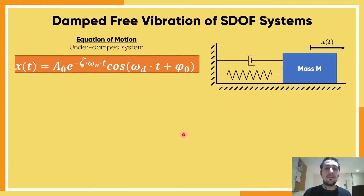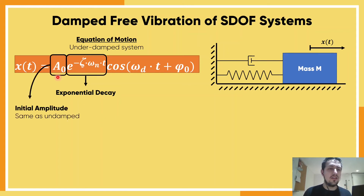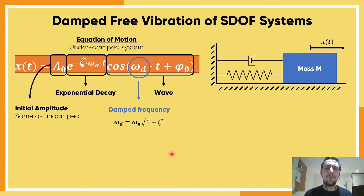Let's explore the equation of motion of an underdamped system. The first and most important term in this video is the exponential term, which we call the exponential decay. The equation also has A0, which is the amplitude, same as in the undamped case, and a cosine wave defining the harmonic motion. Another interesting quantity is omega-d, the damped frequency, which equals the circular natural frequency times the square root of (1 minus the damping ratio squared).